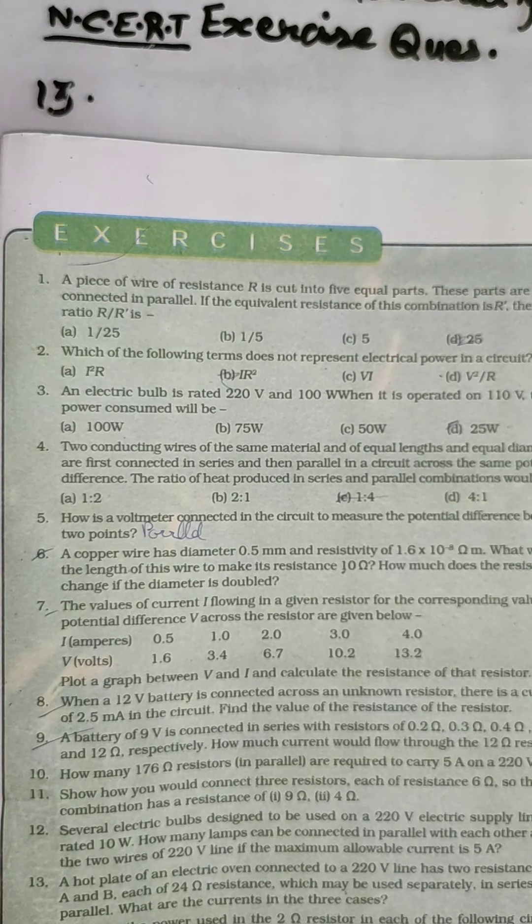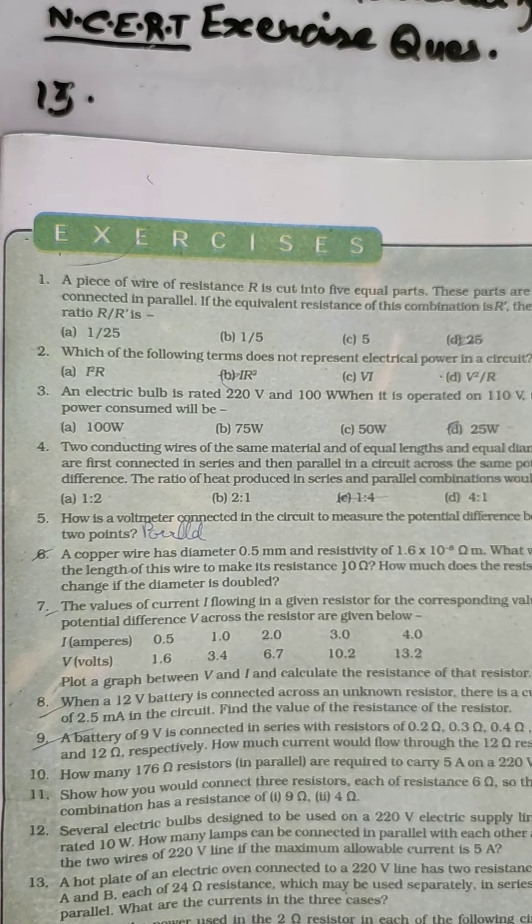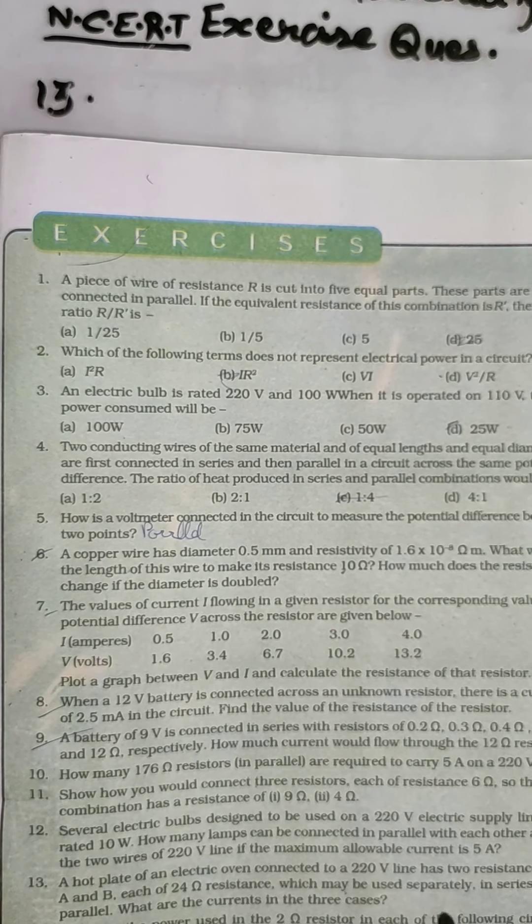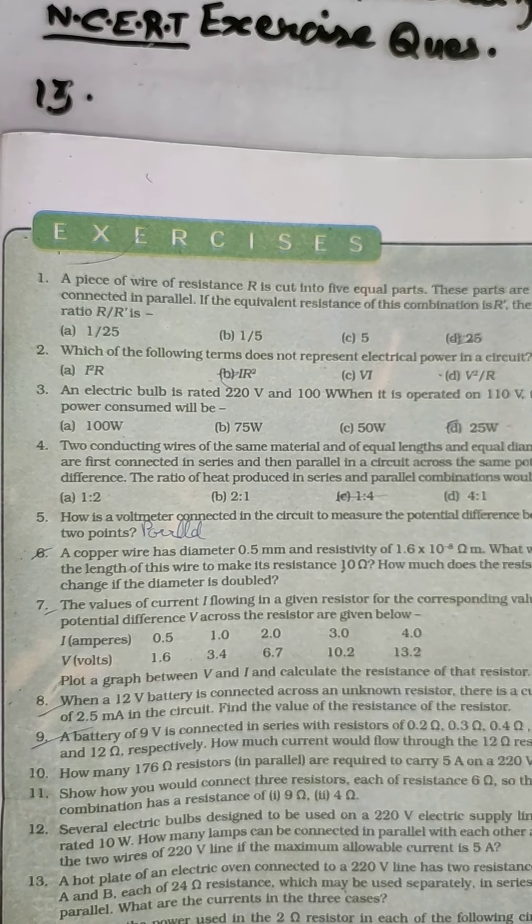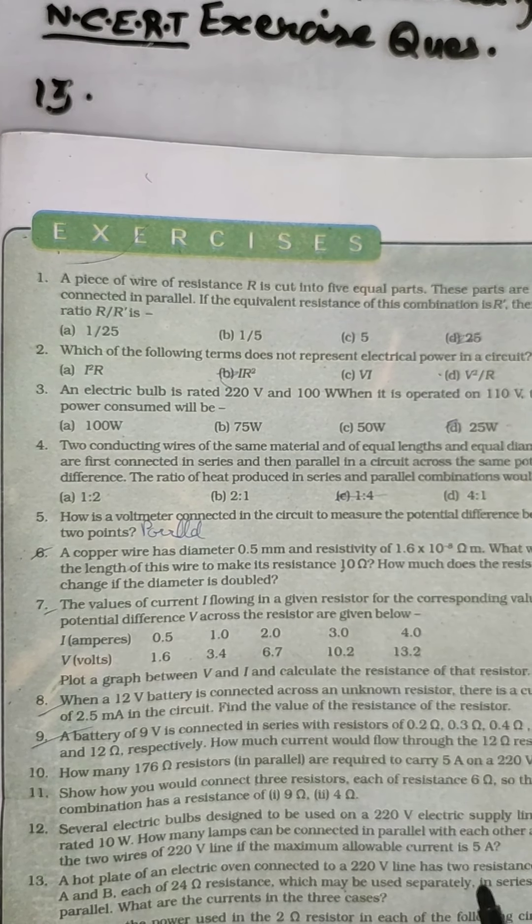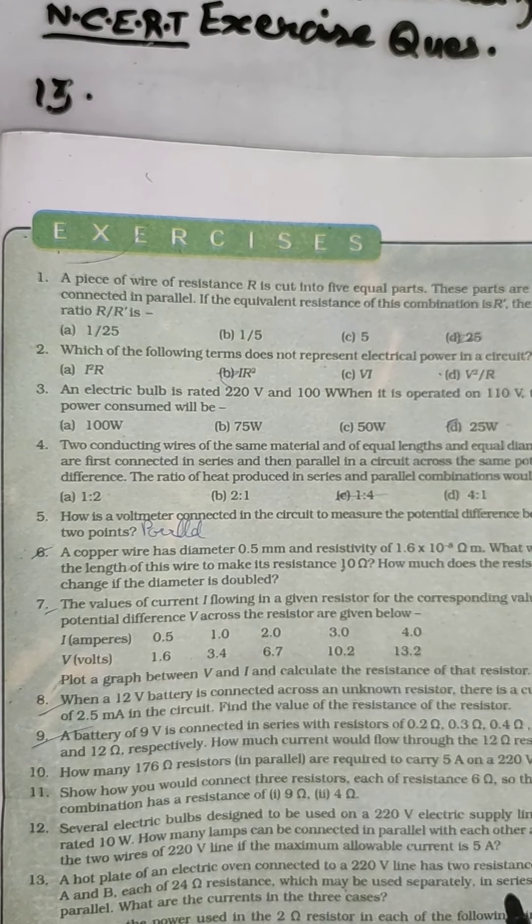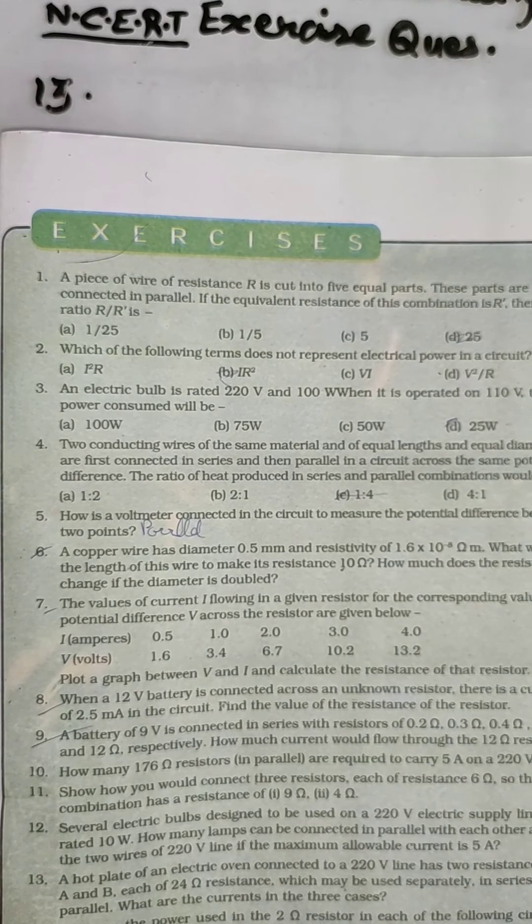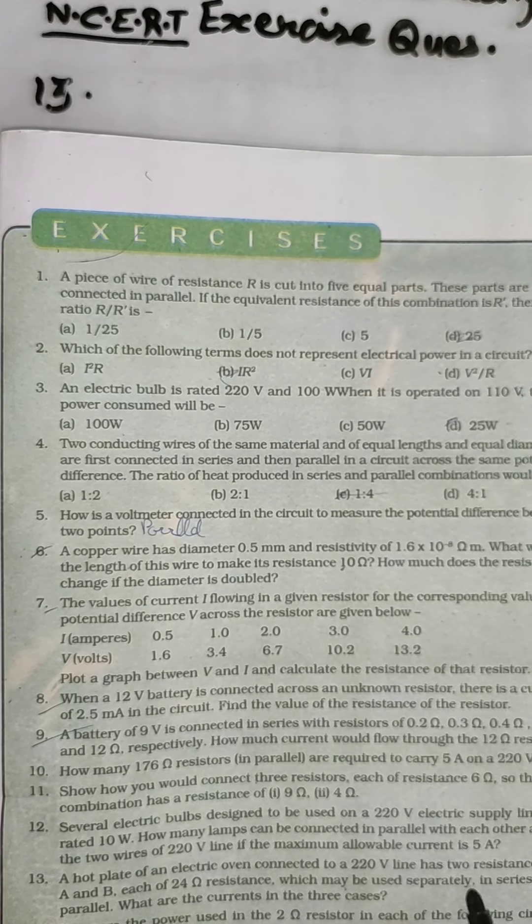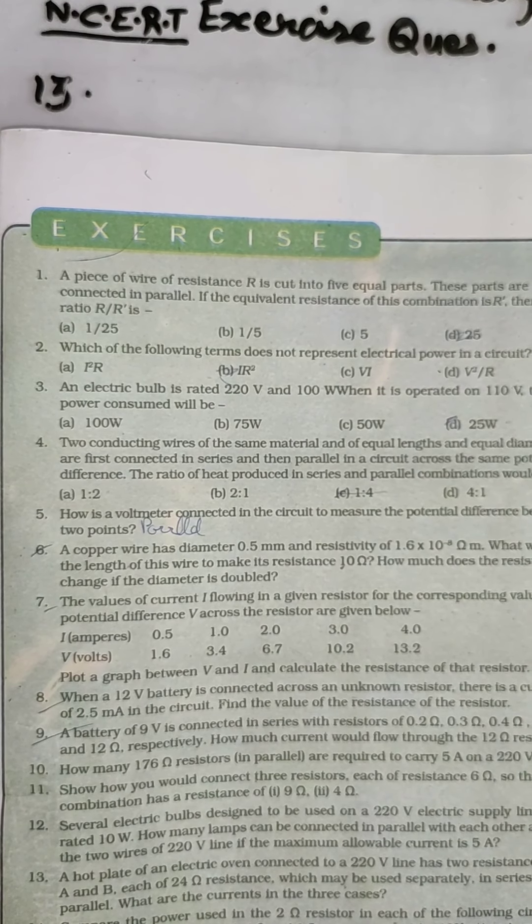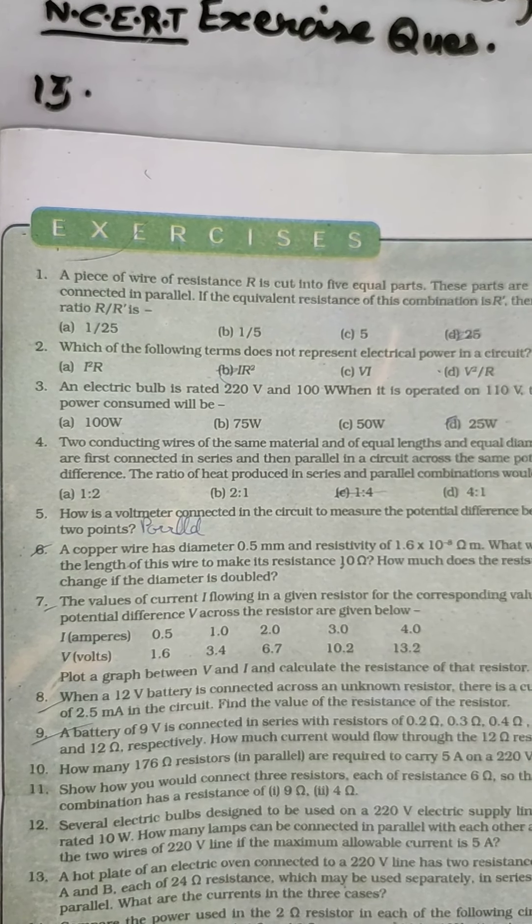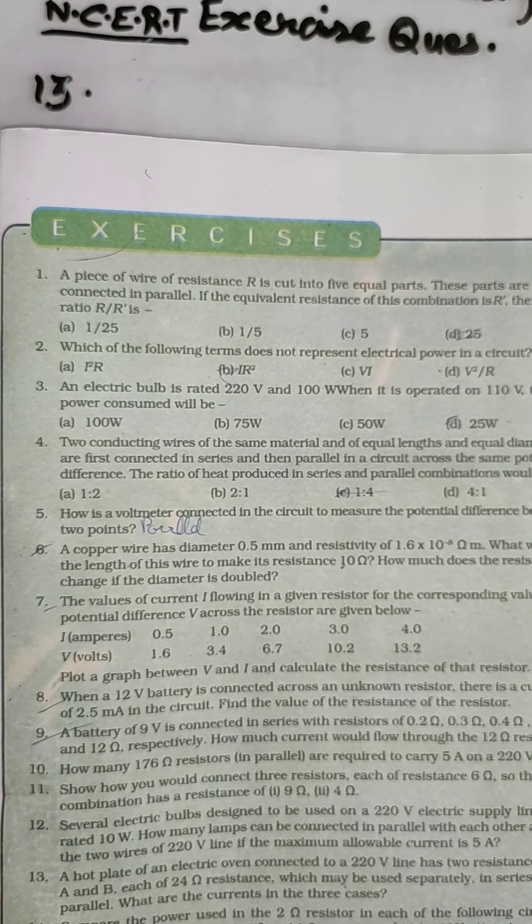What are the currents in three cases? Three cases means if we connect a single resistance coil in the circuit, or in second case if we connect these two resistance coils in series, and third case is if we connect these two resistance coils in parallel. We have to calculate in three parts separately.